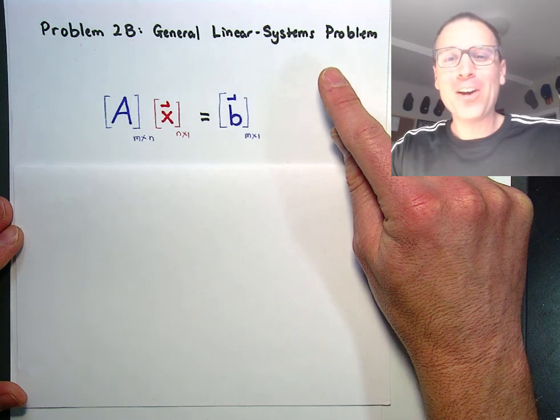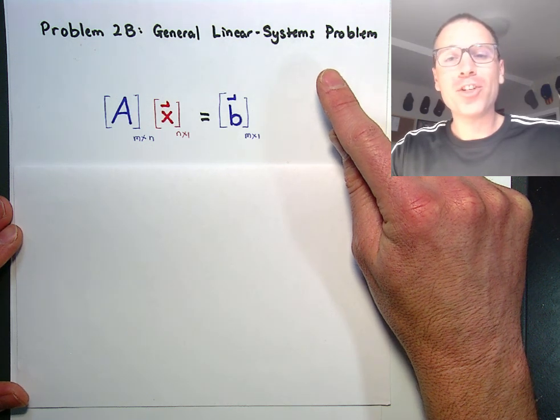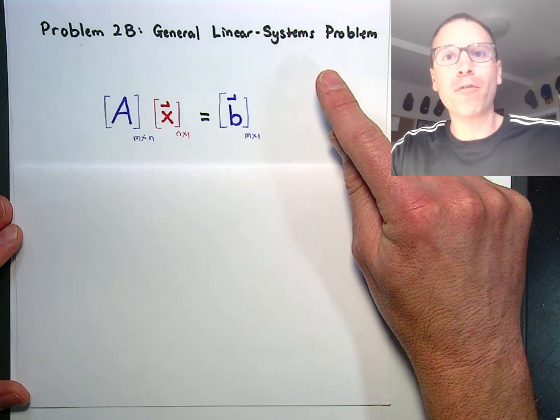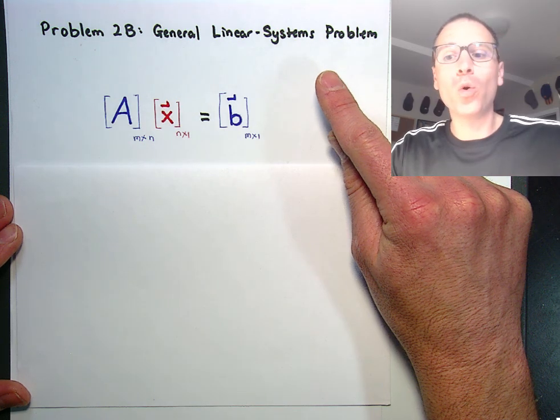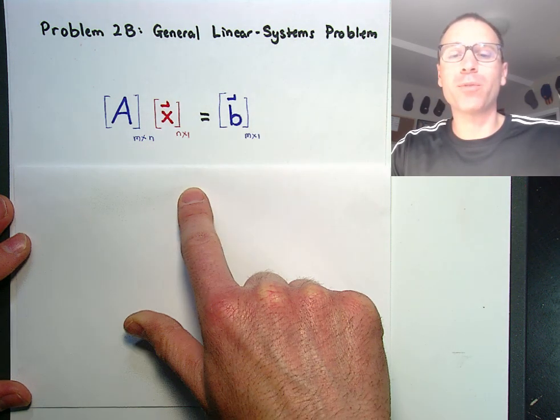Welcome back, y'all. In this video, we're following up with a definition of row echelon form as a tool used to solve general linear systems problems.